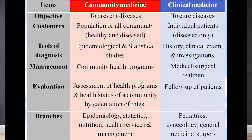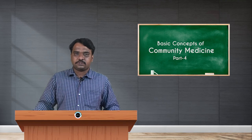The next aspect is evaluation — assessment of health programs and health status of the community by calculation of rates. For example, when a new disease arises in a community, the number of people affected from a population of one thousand on day one versus day ten is tracked. At regular intervals, proper statistics and graphical presentations are made on mortality and morbidity rates for that specific disease, and the incidence and evaluation are done through community medicine.